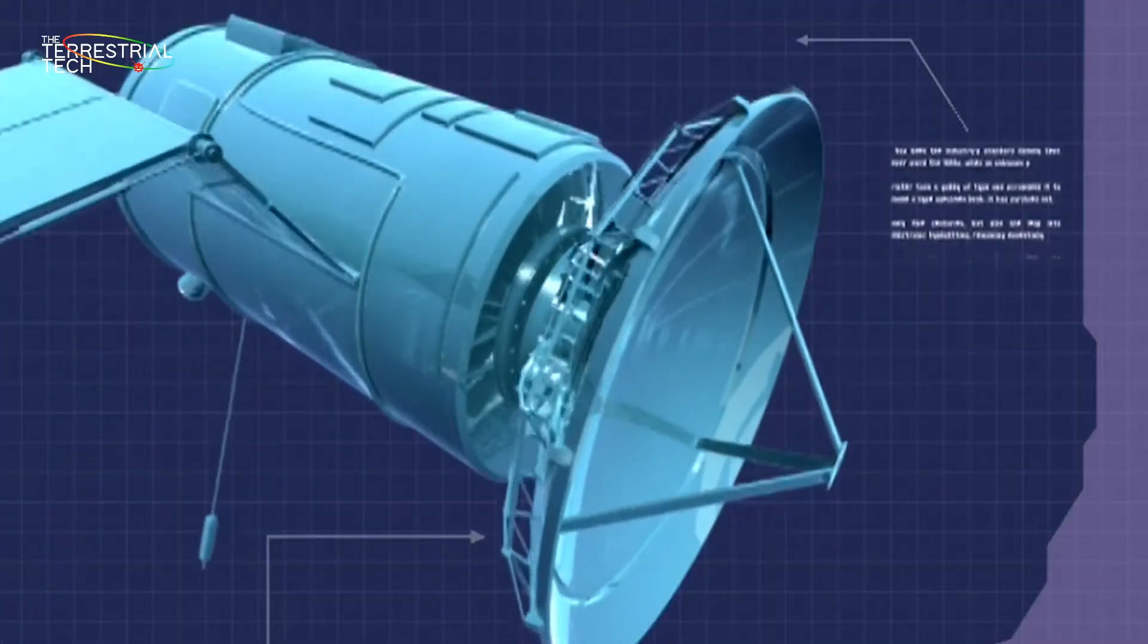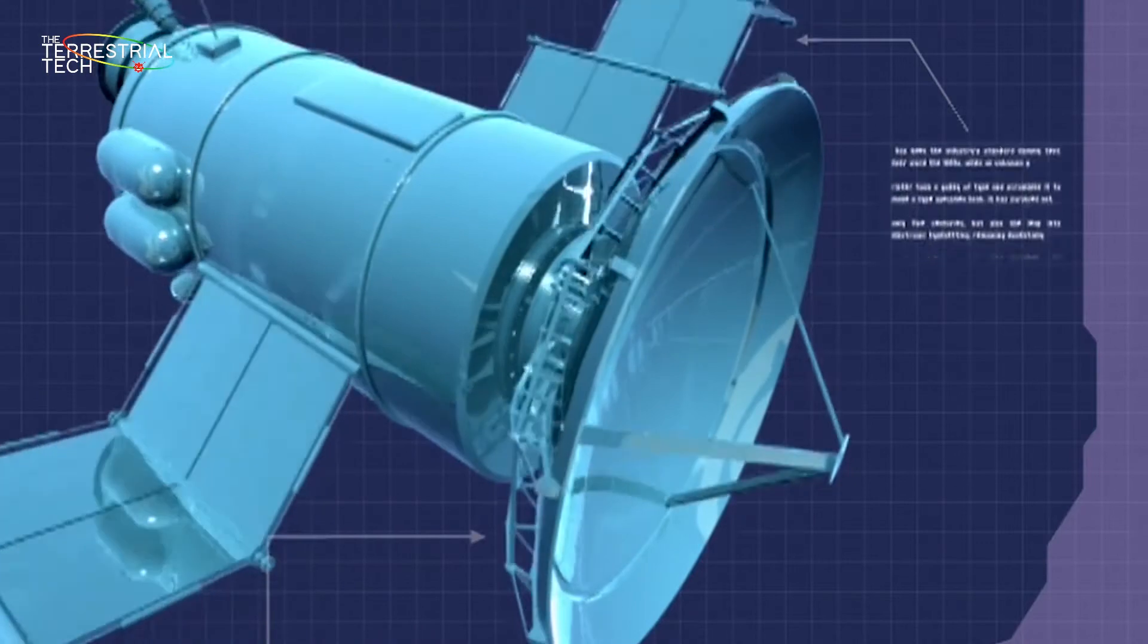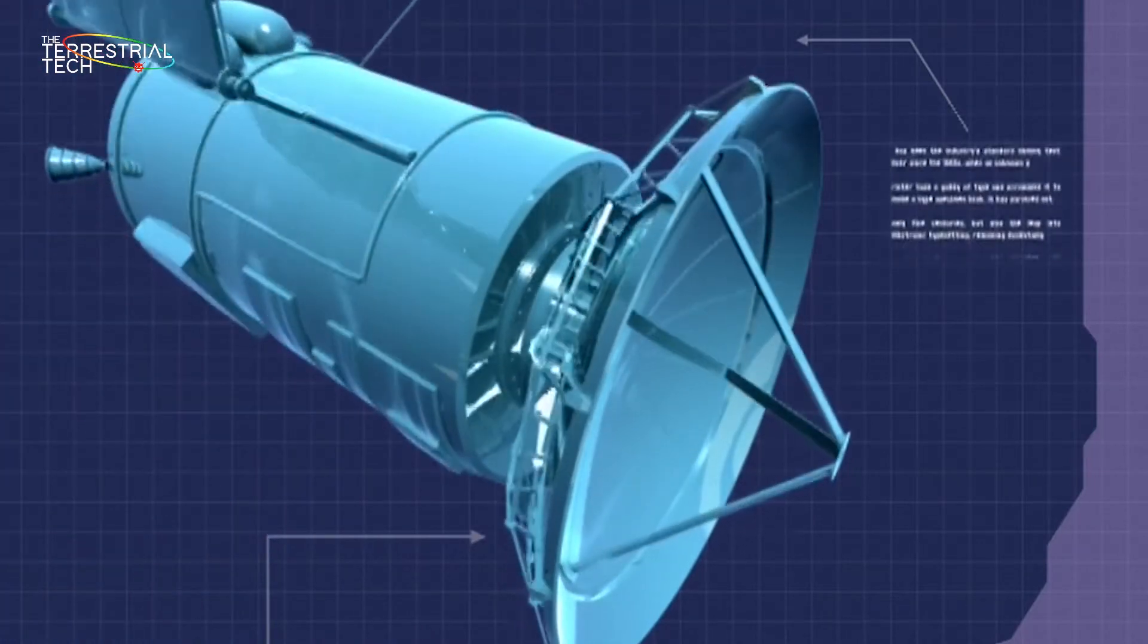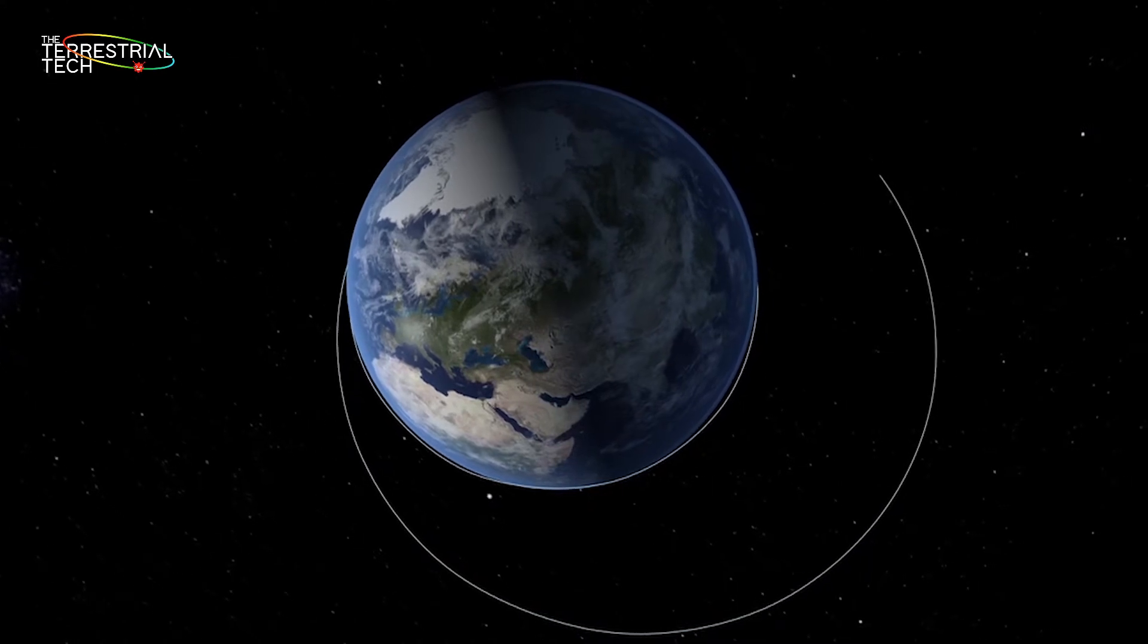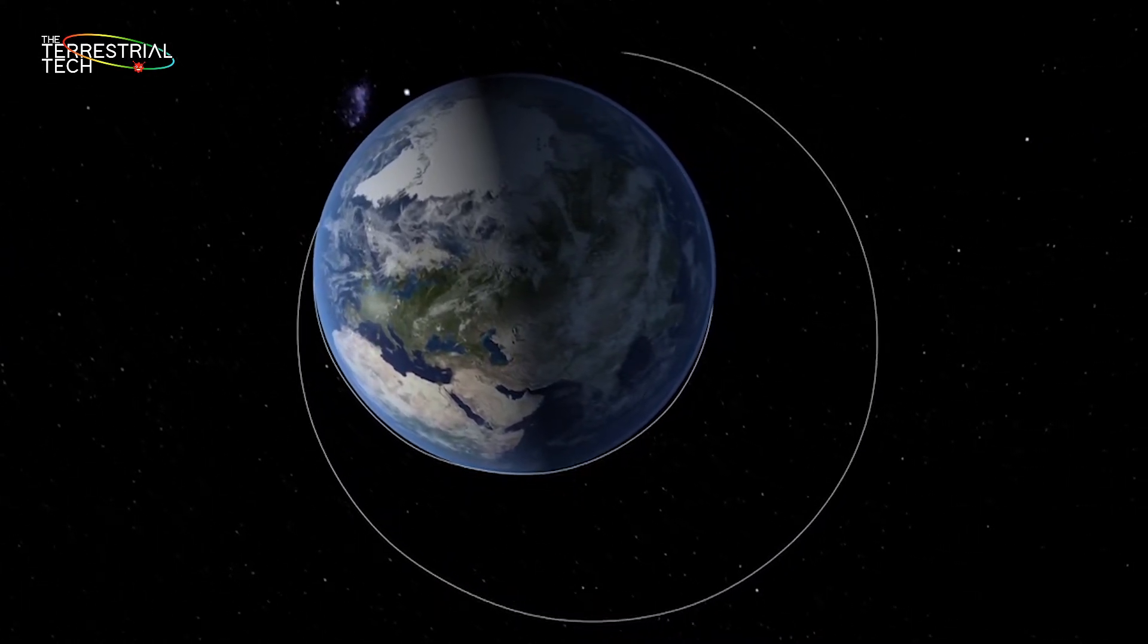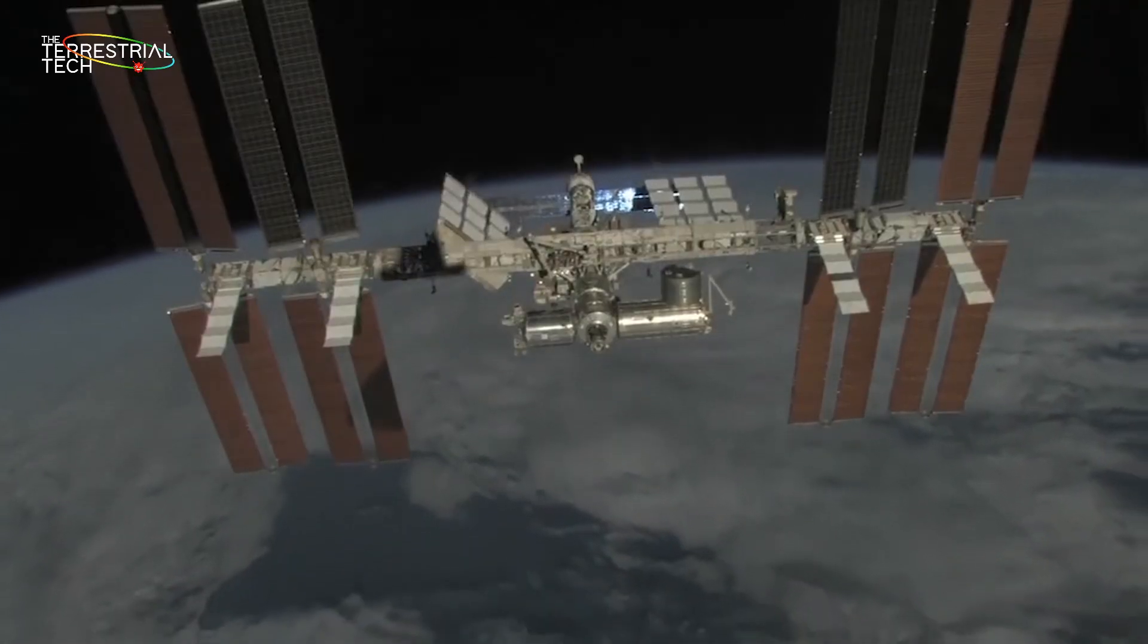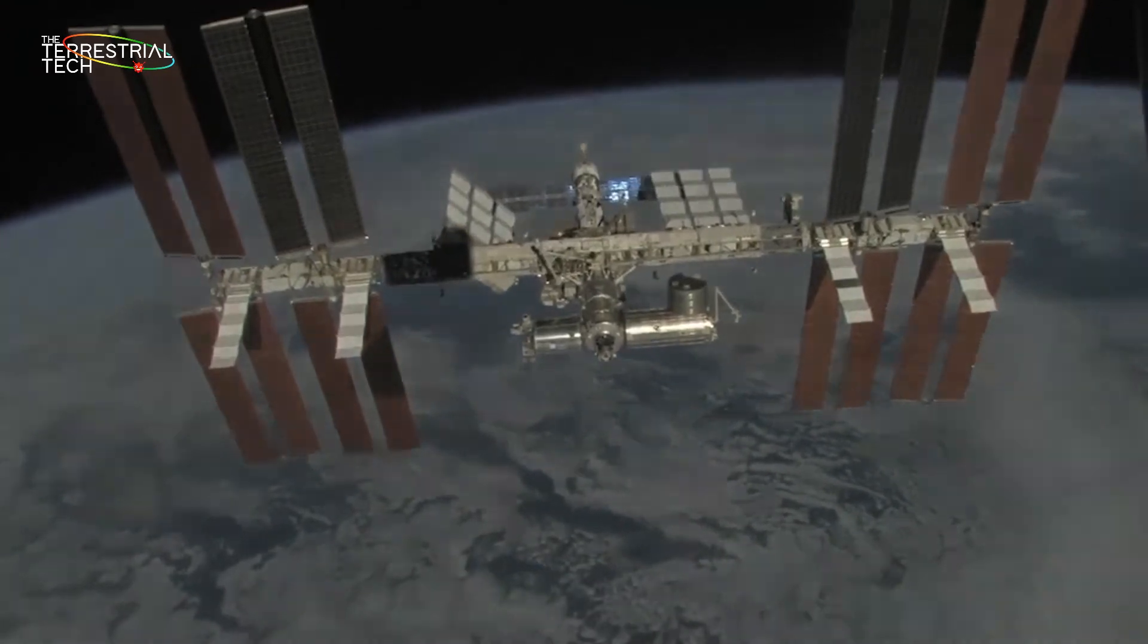A satellite is best understood as a projectile, or an object that has only one force acting on it: gravity. Technically, anything that crosses the Kármán line at a height of 100 kilometers (62 miles) is considered to be in space. And to prevent any satellite from falling back to Earth, its speed must be 5 miles per second.